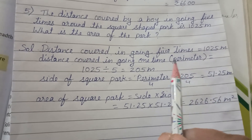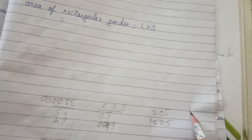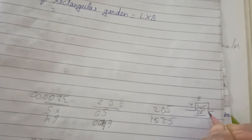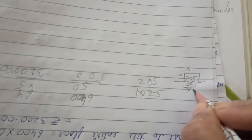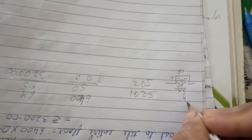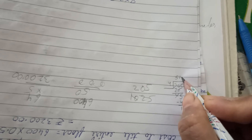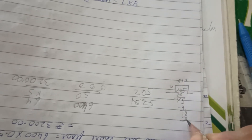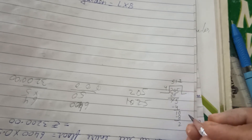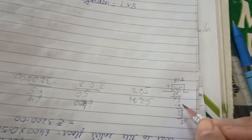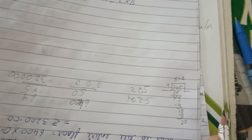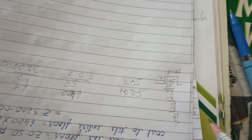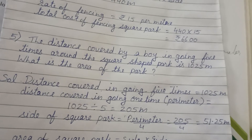Divide 205 by 4: 4 × 5 = 20, remainder 0; bring down 5: 4 × 1 = 4, remainder 1. Put a decimal point and add zero: 10 ÷ 4 = 2, remainder 2. Add another zero: 20 ÷ 4 = 5, remainder 0. So side = 51.25 meters.